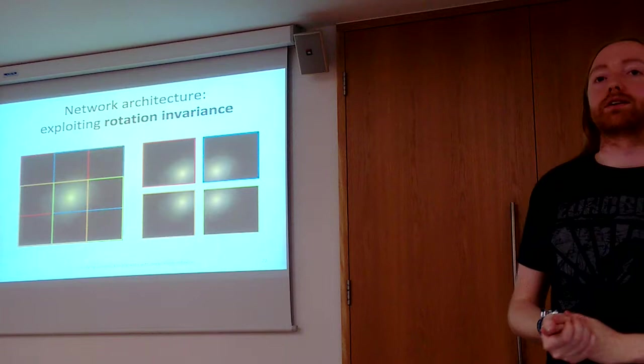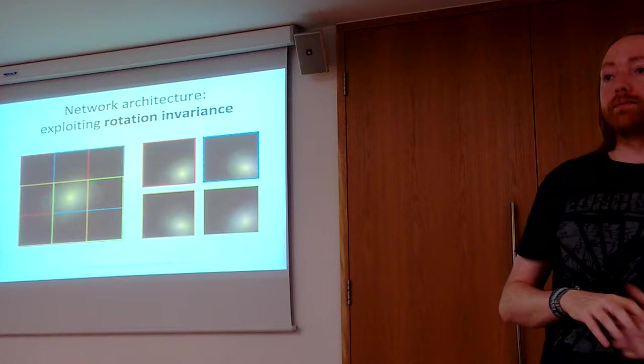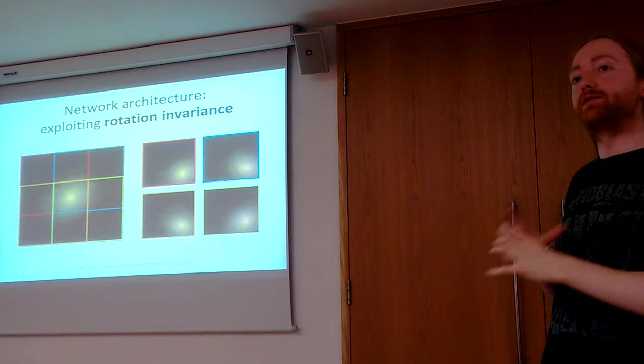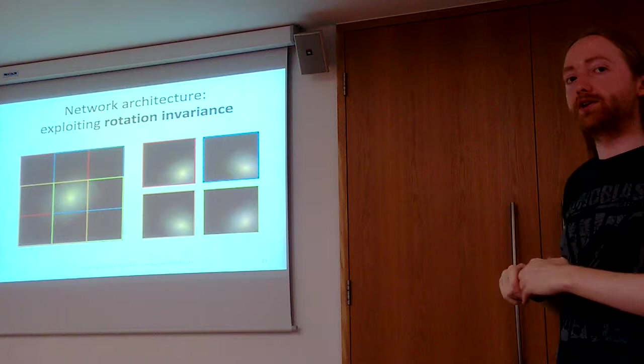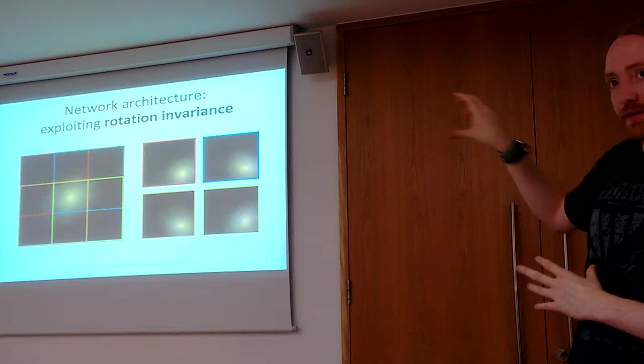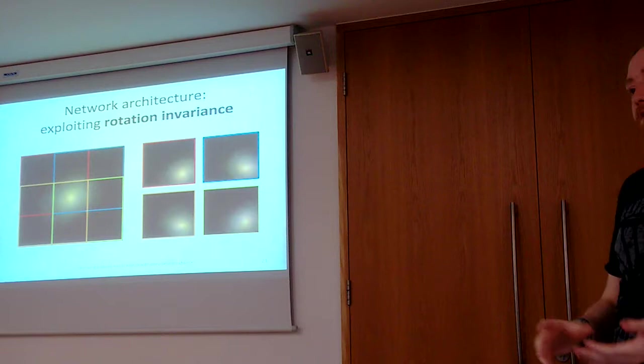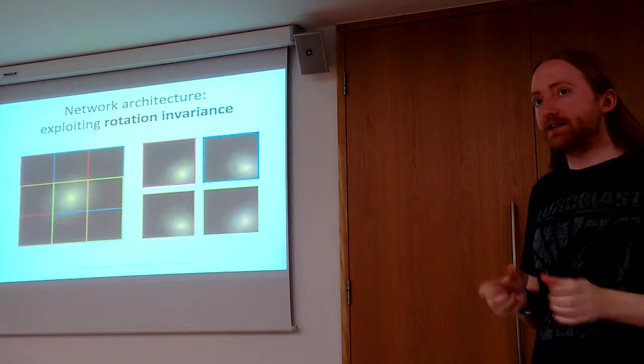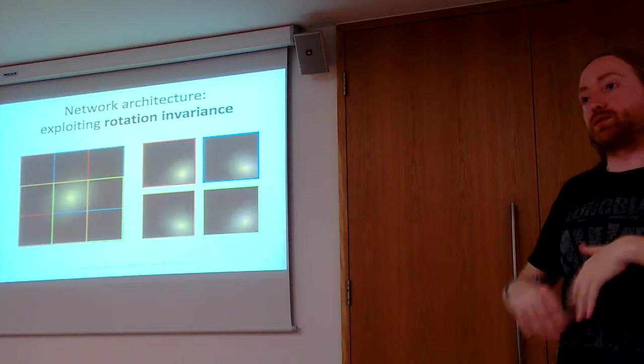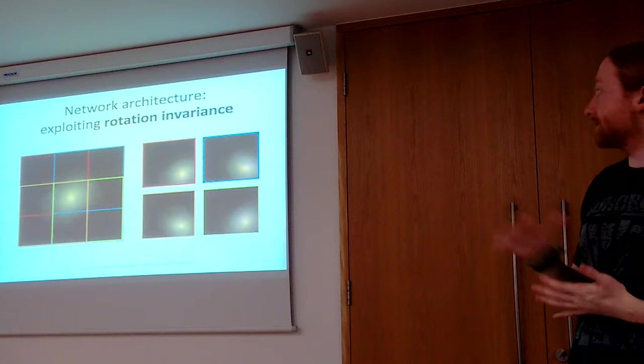And we always include the center of the galaxy because this is a very important part of the image, it turns out. So this actually gives a lot of information. And then we take all of these four and we rotate them to align them. And then we have, in total, 16 of these smaller 45 by 45 pixel images where the center of the galaxy is in the bottom right corner. And these all provide different viewpoints of the same object, but they all have the same statistics because the galaxy is oriented in the same way. So we can process all of these with the same stack of convolutional layers.